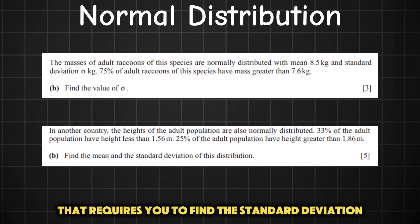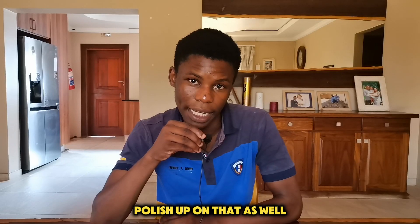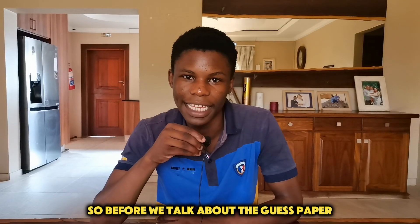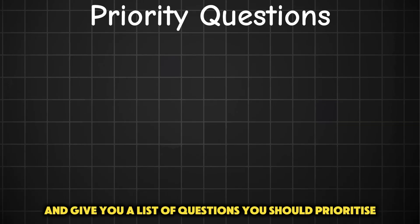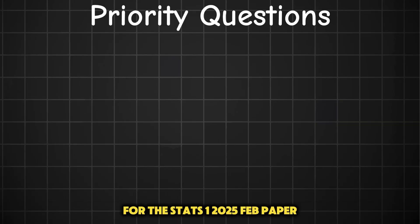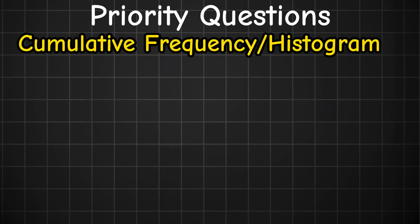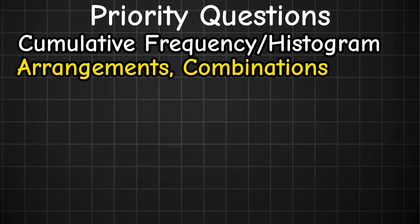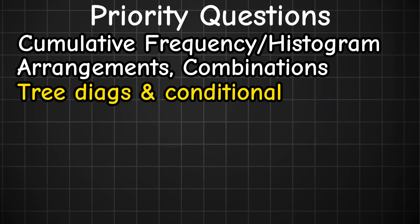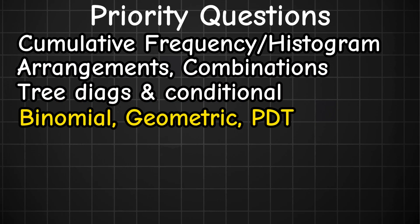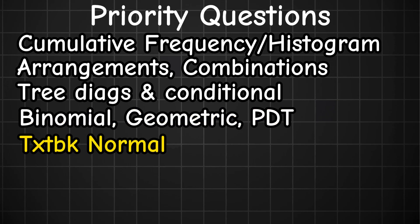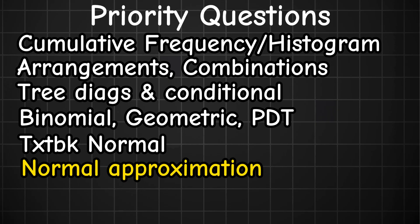There's also the question that requires you to find the standard deviation and/or mean, so be sharp on that as well. To summarize, here's a list of questions to prioritize for the Stats 1 February 2025 paper: cumulative frequency graph or histogram, arrangements, combinations, tree diagrams and conditional probability, binomial distribution, geometric distribution, probability distribution table, textbook normal distribution, and normal approximation.